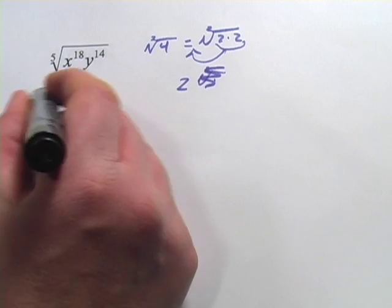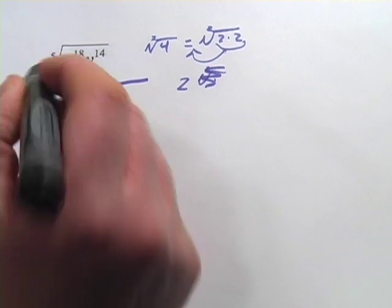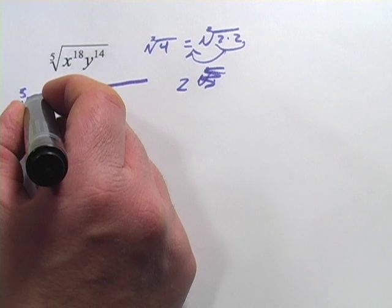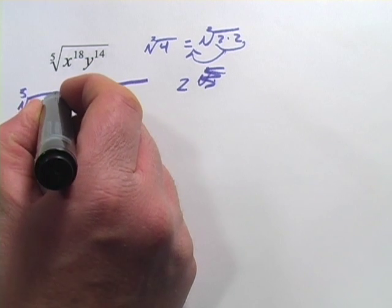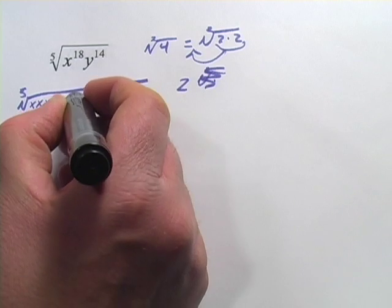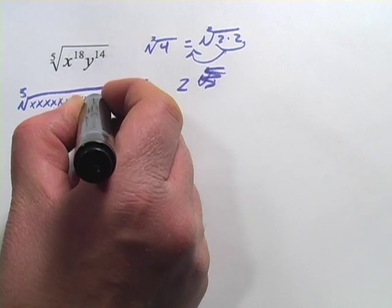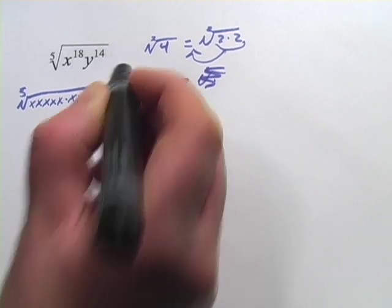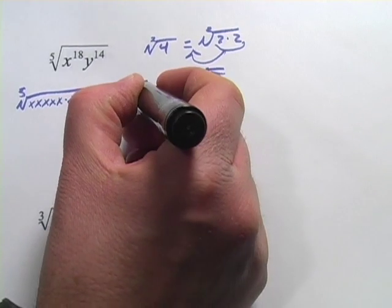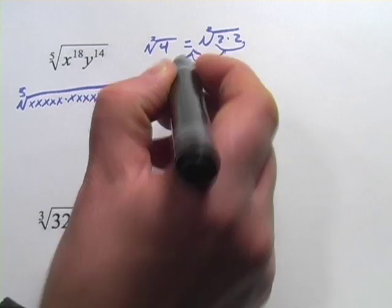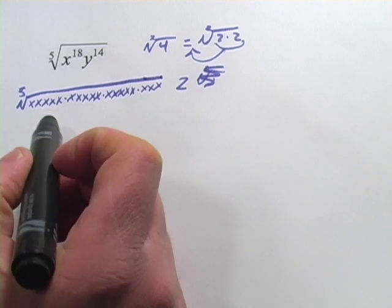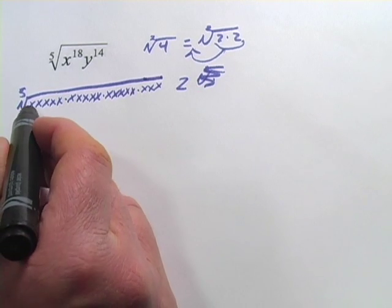You could rewrite this. This is going to take a little bit of room. The fifth root of x to the eighteenth would be eighteen x's all multiplied by each other. Now there's five. I'm going to leave them in groups of five. And let's see, there's fifteen, so there's three more. Now, since this is a fifth root, for now I'm just leaving the y's out of this. I'm just going to deal with the x's. Since this is the fifth root...